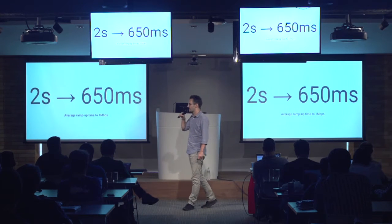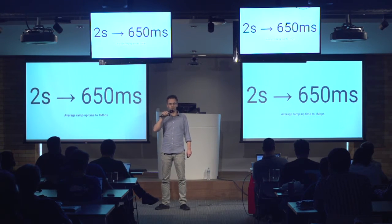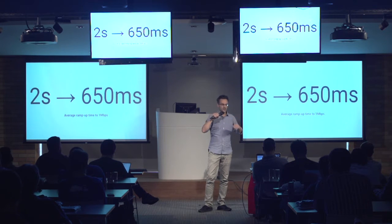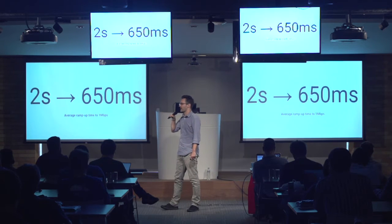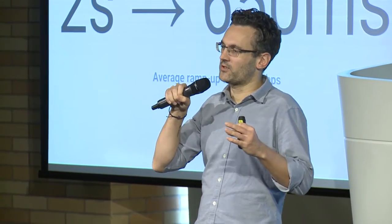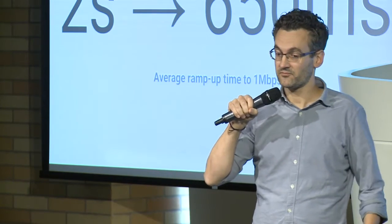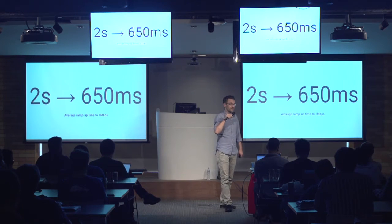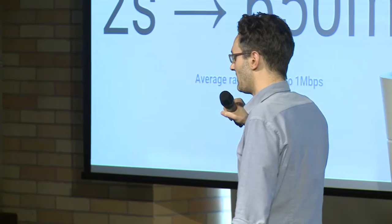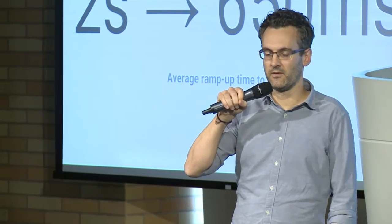On bandwidth estimation: at the beginning of this year, the median ramp-up time to one megabit video was about two seconds. We've since switched the algorithm from a send-receive side split to moving all bandwidth estimation logic to the send side, with a feedback format provided from the receiver back to the sender. This allows us to decrease ramp-up time to one megabit down to 650 milliseconds — below one second. This is why Duo works so well and why we can do knock-knock with good video quality from the very beginning.